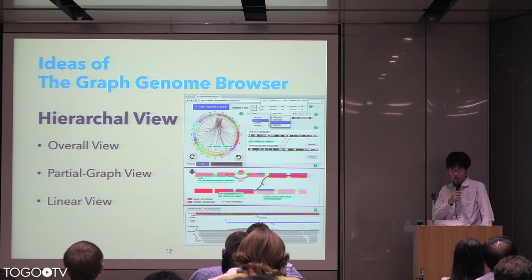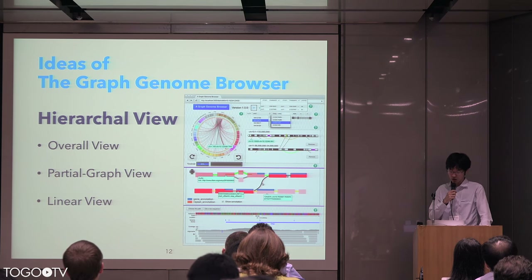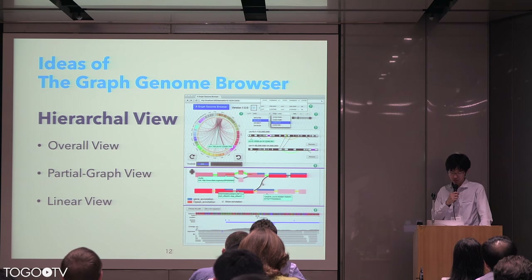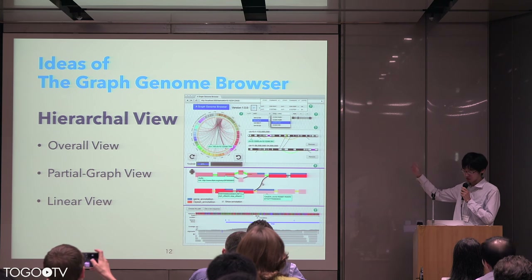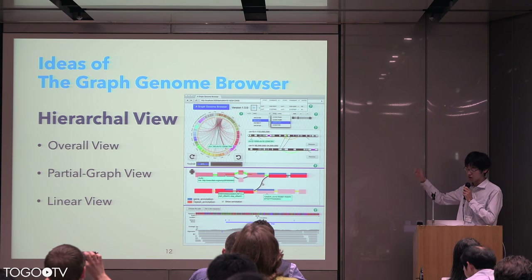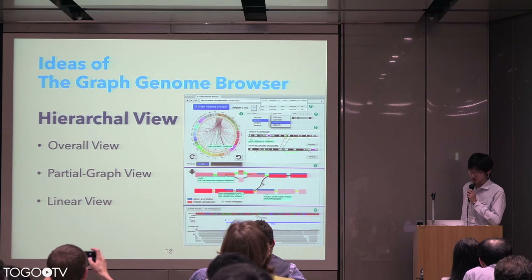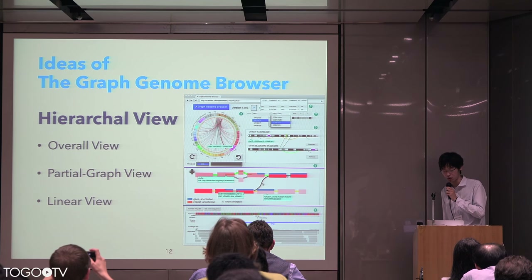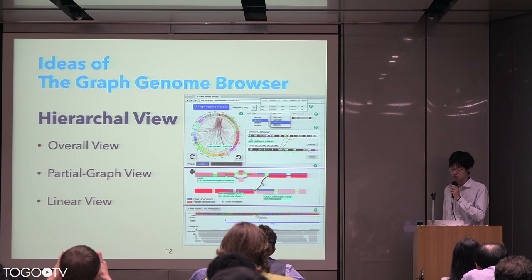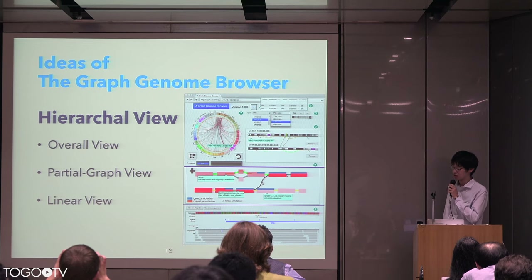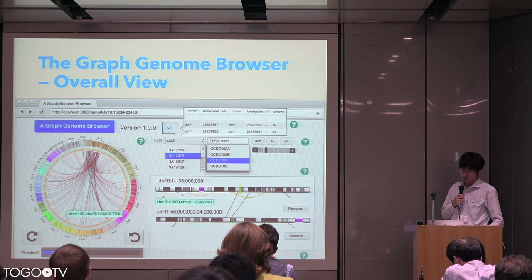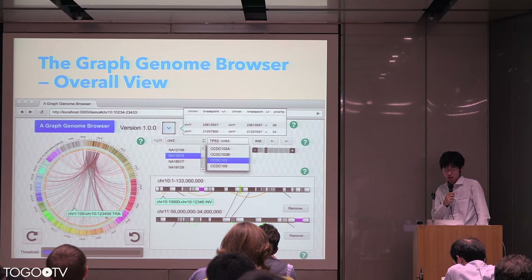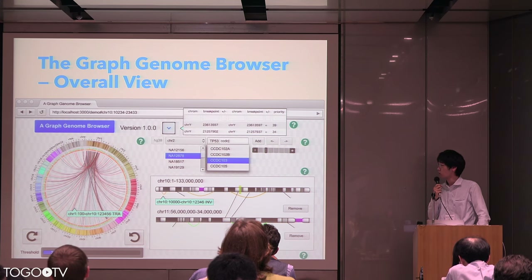So, I propose ideas for the Graph Genome Browser. The core concept is the hierarchical view — that is, an overall view, a partial graph view, and a line-up view. I will show you the mock-up and describe the flow of exploring the layered graph on this idea. This is the upper half of the mock-up: the overview.